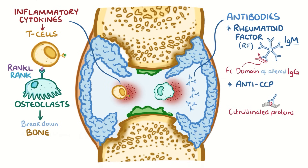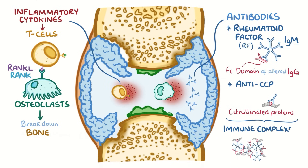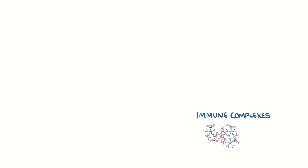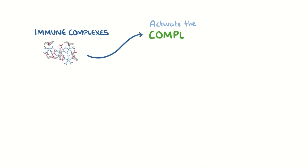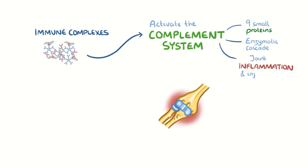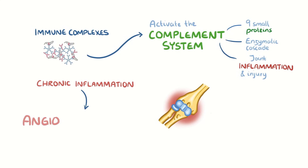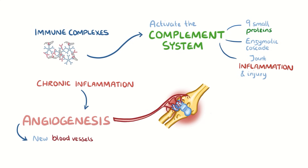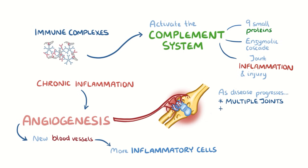When these antibodies bind to their targets, they form immune complexes, which accumulate in the synovial fluid. There, they activate the complement system — a family of nine small proteins that work in an enzymatic cascade to promote joint inflammation and injury. Finally, the chronic inflammation causes angiogenesis, or the formation of new blood vessels around the joint, which allows even more inflammatory cells to arrive. As the disease progresses, multiple joints on both sides of the body get inflamed and gradually destroyed.